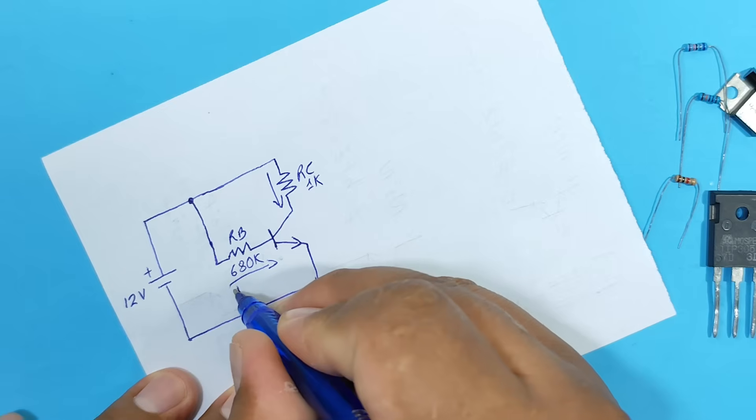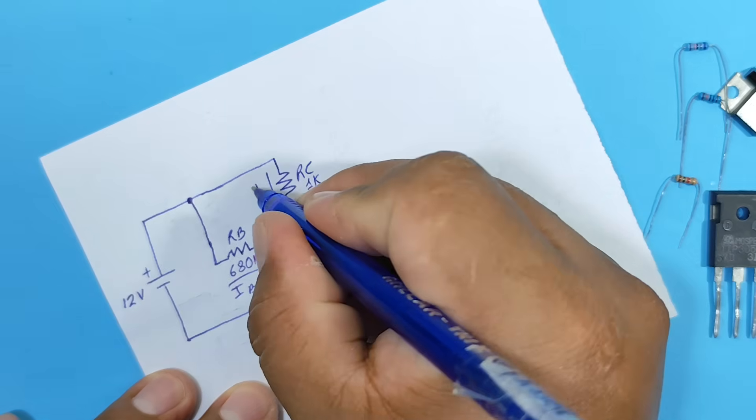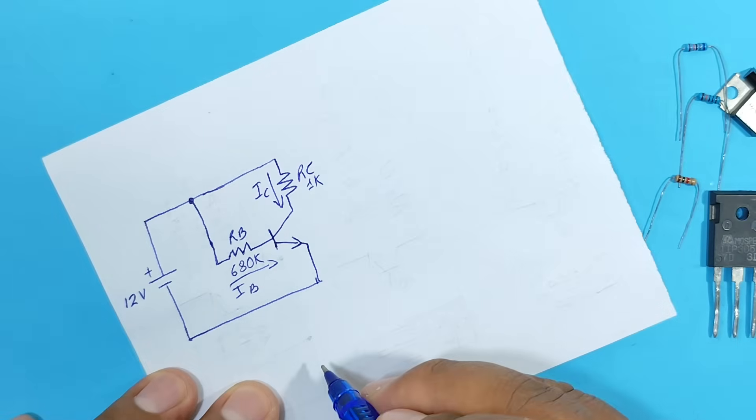With these voltages, we can calculate the current flowing through each resistor. In other words, we'll be able to calculate the base current. And with these two currents, we can calculate the gain.